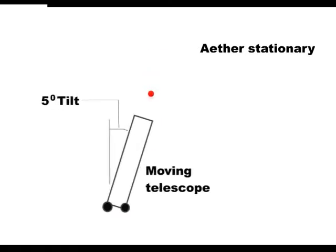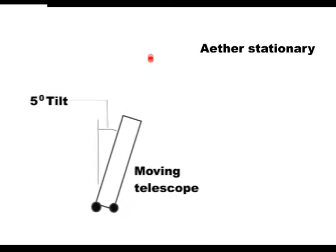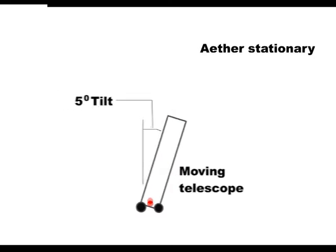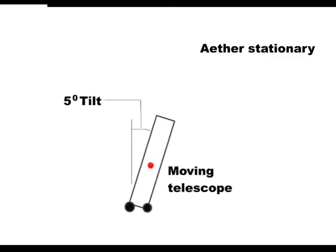In 1729, Bradley found that he had to tip his telescope forward very slightly to get a star in the center of his telescope. It was assumed that this was due to the motion of the Earth around the Sun.